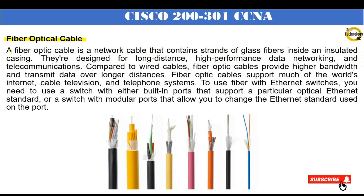Fiber-optic cable: a fiber-optic cable is a network cable that contains strands of glass fibers inside an insulated casing. They're designed for long-distance, high-performance data networking and telecommunications. Compared to wired cables, fiber-optic cables provide higher bandwidth and transmit data over longer distances. Fiber-optic cables support much of the world's internet, cable television, and telephone systems. To use fiber with ethernet switches, you need a switch with either built-in ports supporting a particular optical ethernet standard, or modular ports that allow you to change the ethernet standard used on the port.